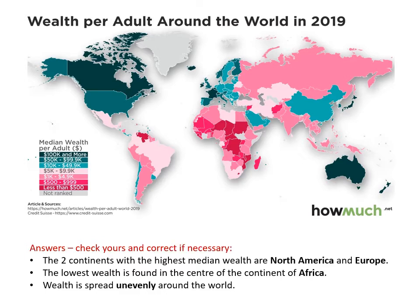The two continents with the highest median wealth are North America and Europe. The lowest wealth is found in the centre of the continent of Africa. Wealth is spread unevenly around the world — we already made that point from the previous graph, but once again we have more proof that there is a big difference between different countries around the world.